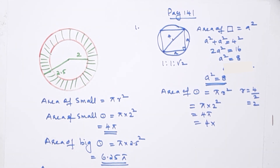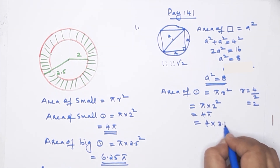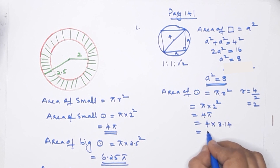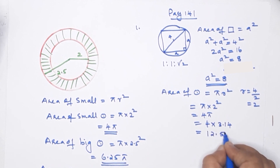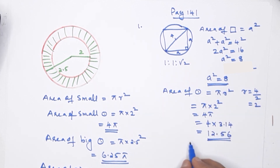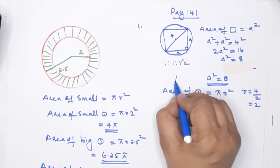We multiply: 4 × 3.14 = 12.56. So the area of the circle is 12.56 and the area of the square is 8.